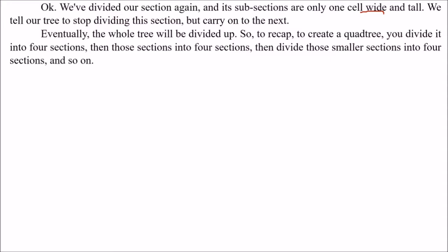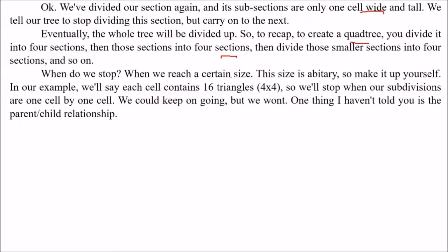To recapture: to create a quad tree, you divide it into four sections, then those sections into four sections, and so on and so forth. We stop when we reach a certain size — the size is arbitrary, so decide by yourself. In this example, we say that each cell contains 16 triangles, so we stop when our subdivisions are one cell by one cell.